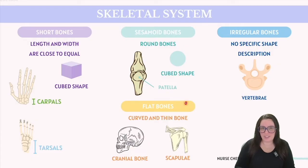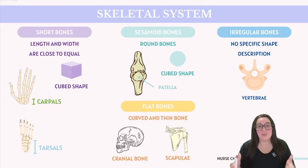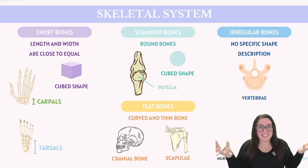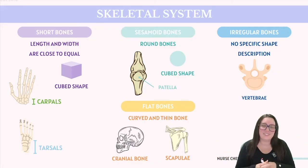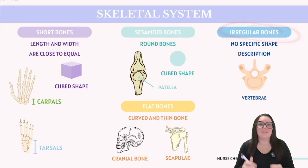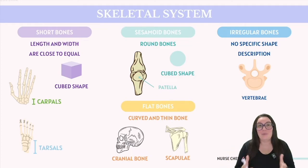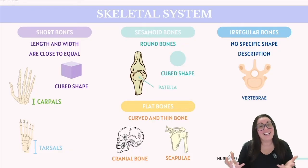Flat bones, despite their name, are not actually flat — they're often curved and thin. These bones include the cranial bones found in our skull and our scapulae, or our shoulder blades, which play a crucial role in body structure as well as protection. Lastly, we have irregular bones, and these kinds of bones defy regular shape classifications. You're going to see much more complex shapes that don't fit standard descriptions. Irregular bones, like the vertebrae, are adapted to protect against a variety of forces and support bodily movements in multiple directions.